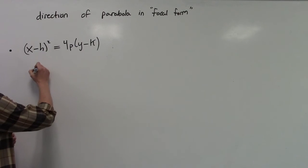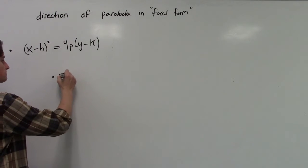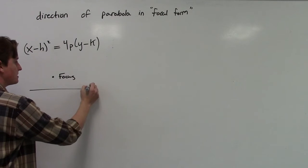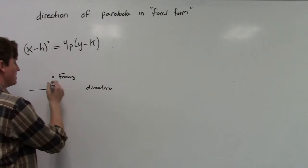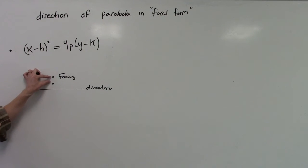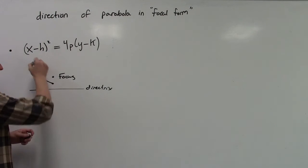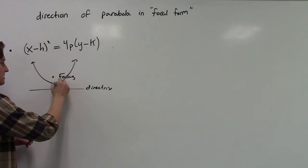When we draw something like this, we're going to have a focus and a directrix, and we're going to have a vertex that is the same distance from the focus as it is from the directrix. So the vertex sits about halfway in between, and then the parabola opens up something like this. This is the vertex.